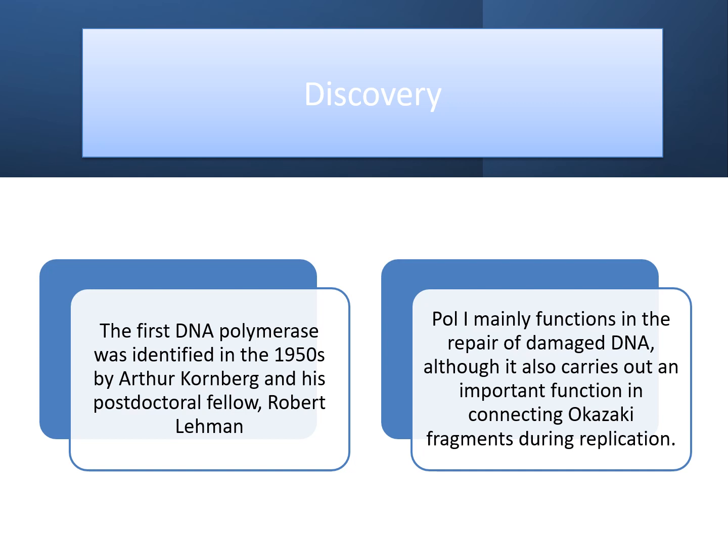Regarding the discovery of this enzyme, the first DNA polymerase was identified in the 1950s by Arthur Kornberg and his post-doctoral fellow Robert Lehman. Initially they did not number them as DNA polymerase 1, 2, and 3, but because of the order of discovery, the enzyme discovered by Kornberg was later given the number 1 — DNA polymerase 1.